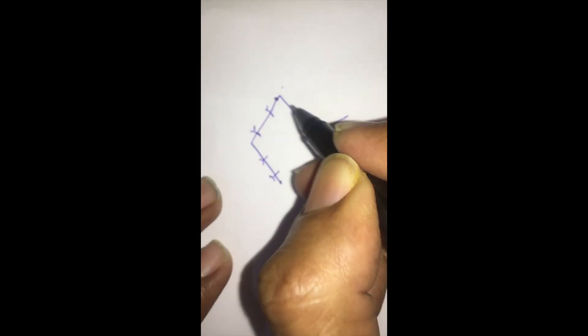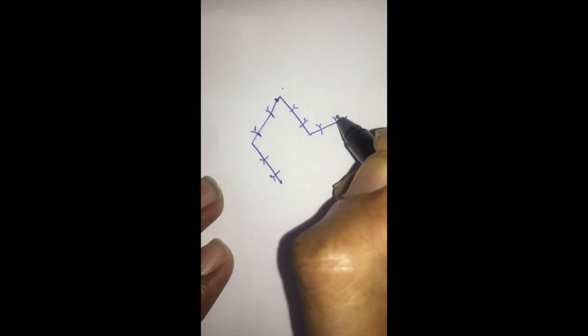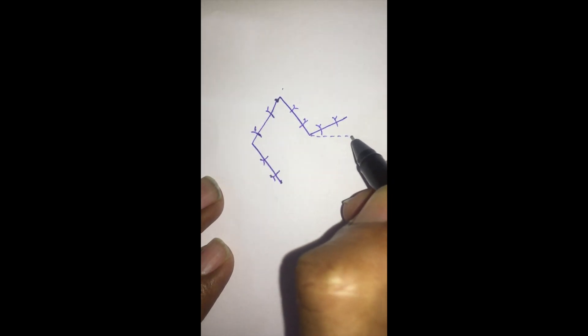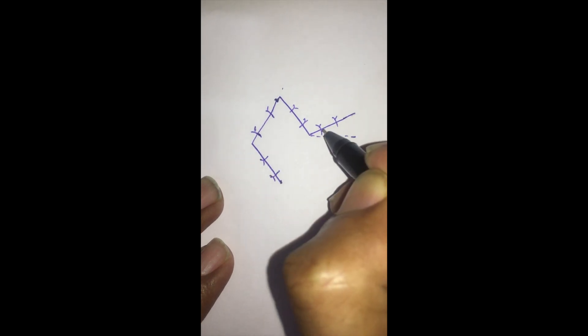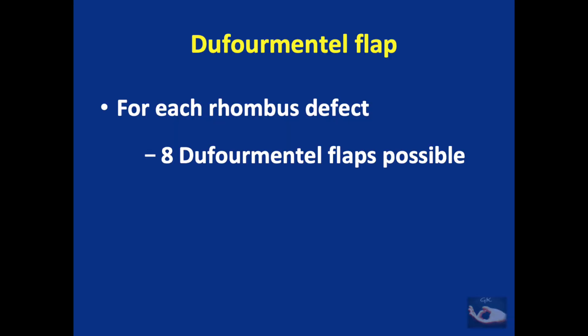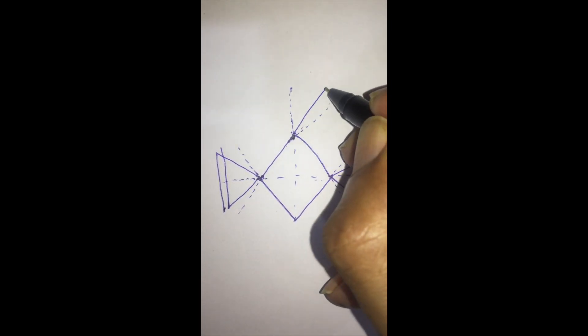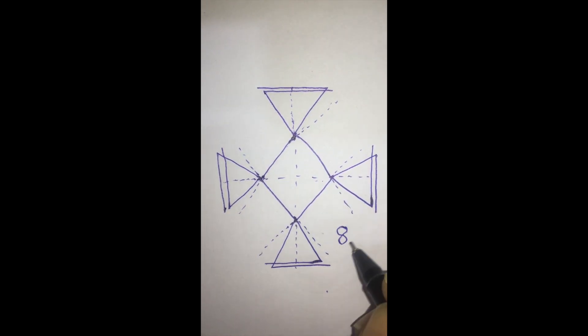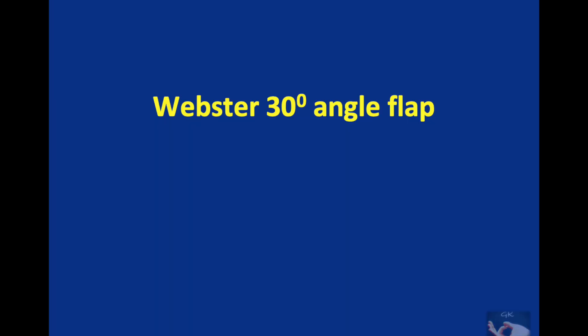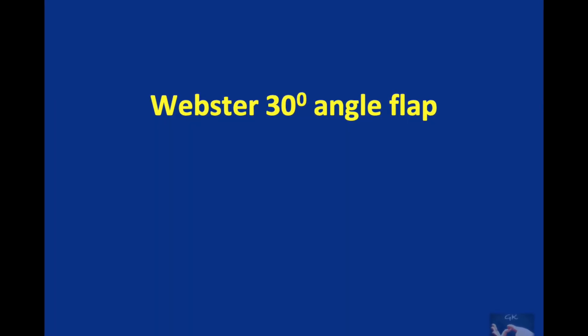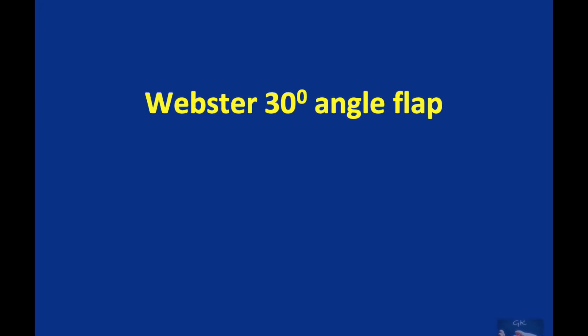There is a difference in that in the Limburg flap the suture line was more transverse, but here it moves upward because the flap has also advanced. We have already seen that when the sides of the rhomboid are all equal, it is called a rhombus. When we have a defect like that and we plan defermental flaps, it is possible to get eight flaps for resurfacing the defect. When the sides are equal, the short diagonals are also equal, so two flaps can be planned from each corner of this defect.